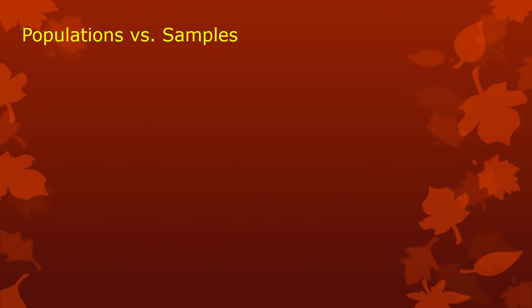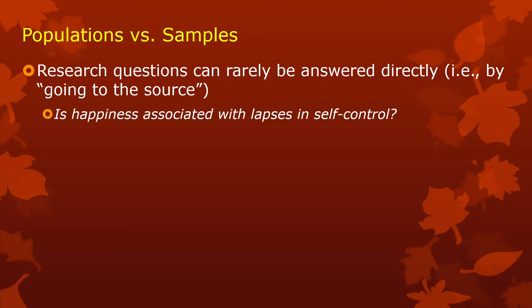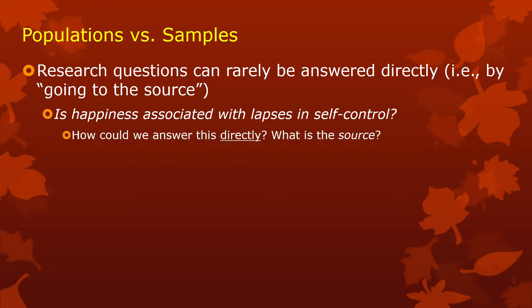Now, shifting gears to populations versus samples. Research questions can almost never be answered directly — that is, by going to the source. So let's say the question is: is happiness associated with lapses in self-control? How could you answer this directly? It's a theory that's supposed to apply to a lot of situations and therefore a lot of people, places, and time periods. There is no one direct way to test this. You test it in a bunch of places, and if it tests out well over and over again in a variety of places where it should, you find support for the theory.